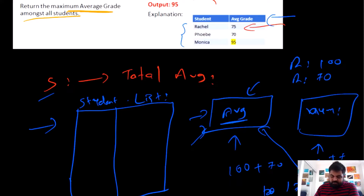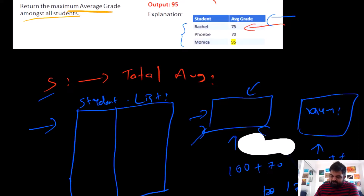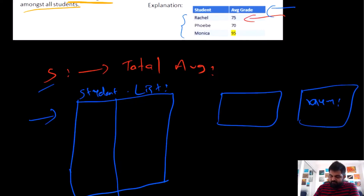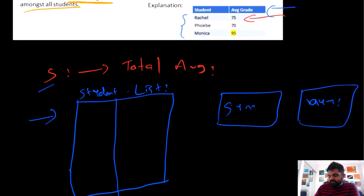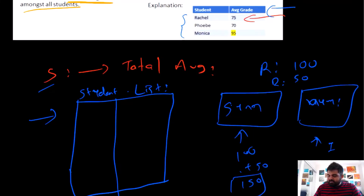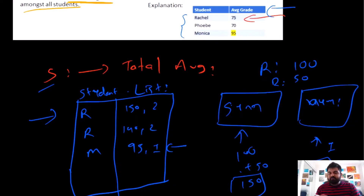The second, improved solution — which the interviewer also liked — was to still use a list with two nodes, but in the first node only store the running sum of all grades so far, not the average. So if Rachel first gets 100, sum is 100 and subjects is 1. Then she gets 50, sum becomes 150 and subjects becomes 2. At the end, for Rachel it's [150, 2], for Phoebe it's [140, 2], and for Monica it's [95, 1] since she only had one input.